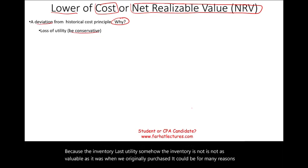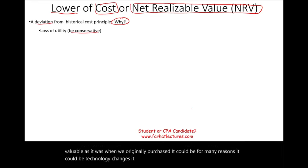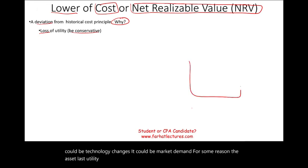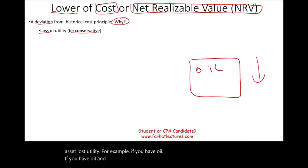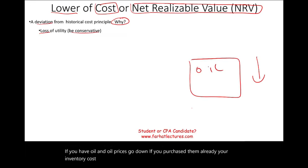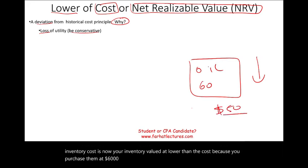It could be technology changes, it could be market demand. For some reason, the asset lost utility. For example, if you have oil and oil prices go down, and you purchased them already, your inventory is now valued at lower than the cost — because you purchased them at $60, and now each barrel of oil is $50. It lost $10 of utility.